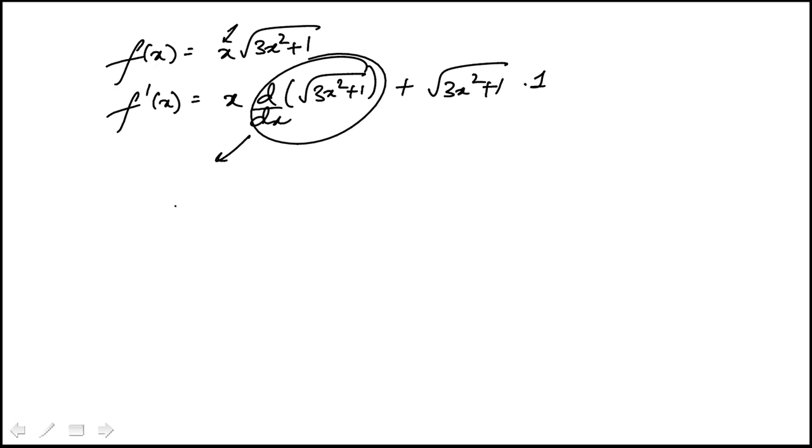I'm going to use chain rule for that. So that would be half 3x squared plus 1, half minus 1, and then derivative of that, the term inside with respect to x, and that's going to be 6x, just of 3x squared plus 1.